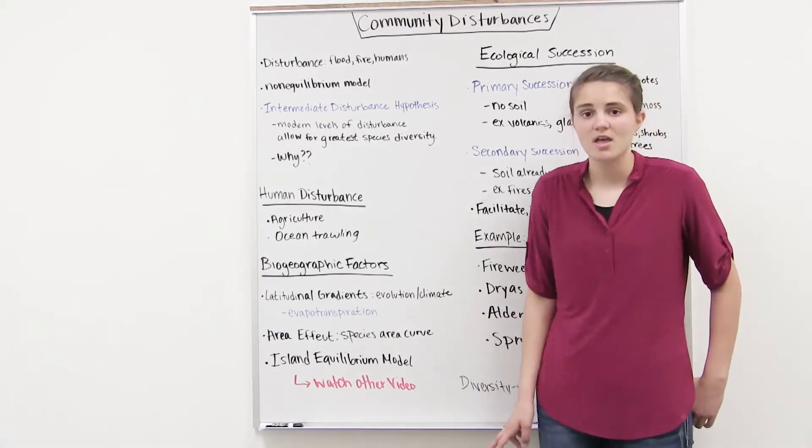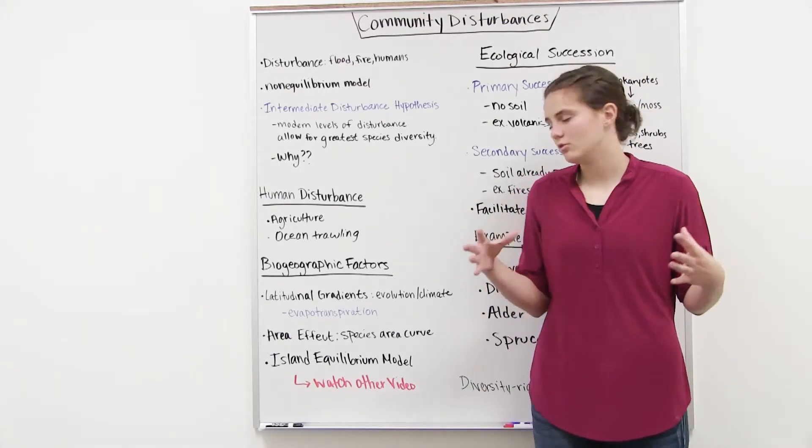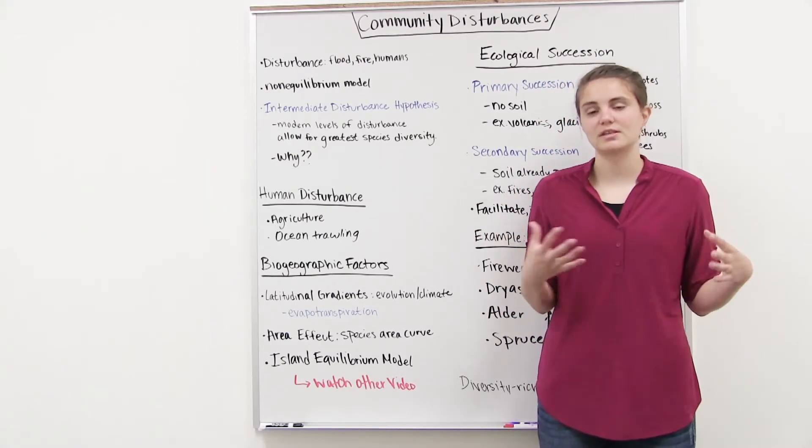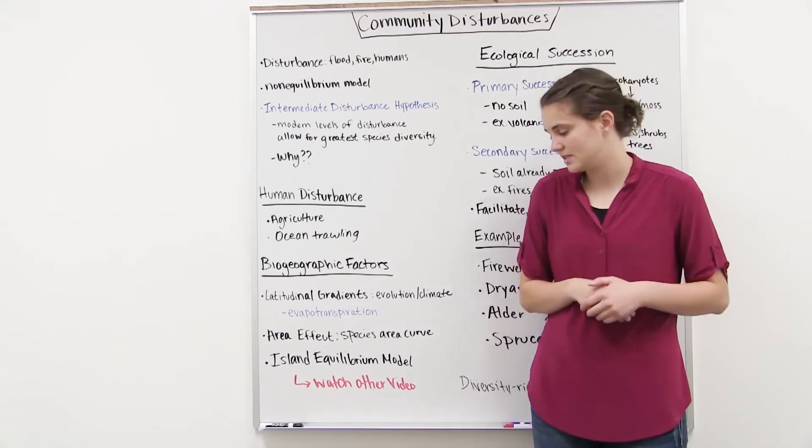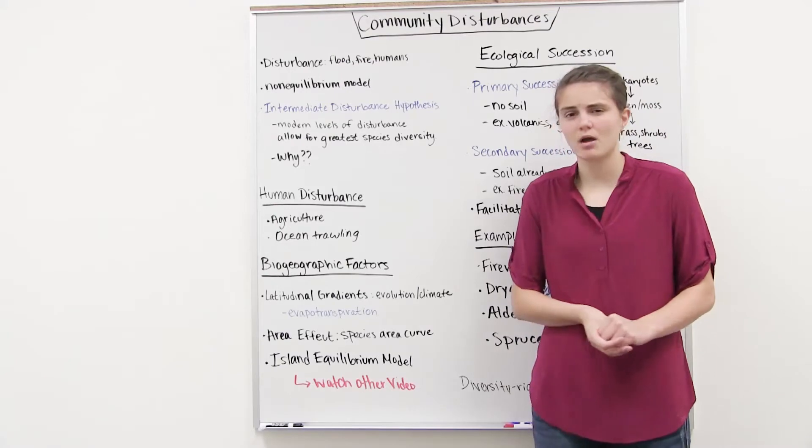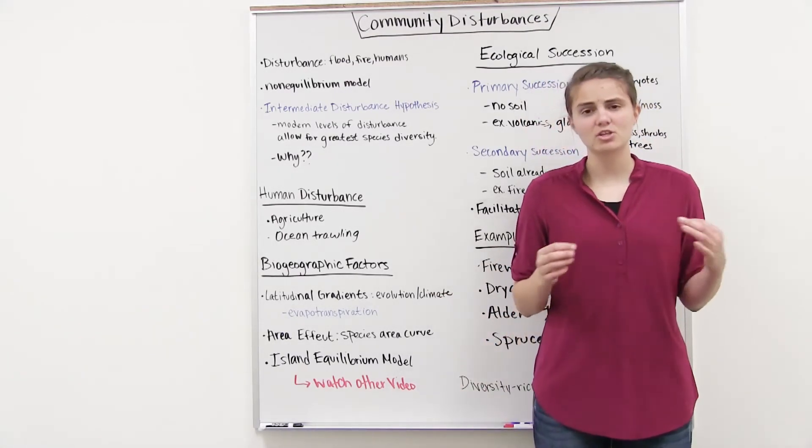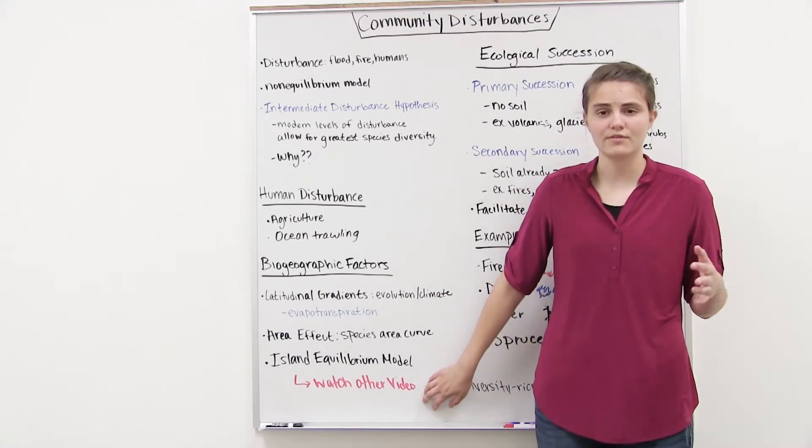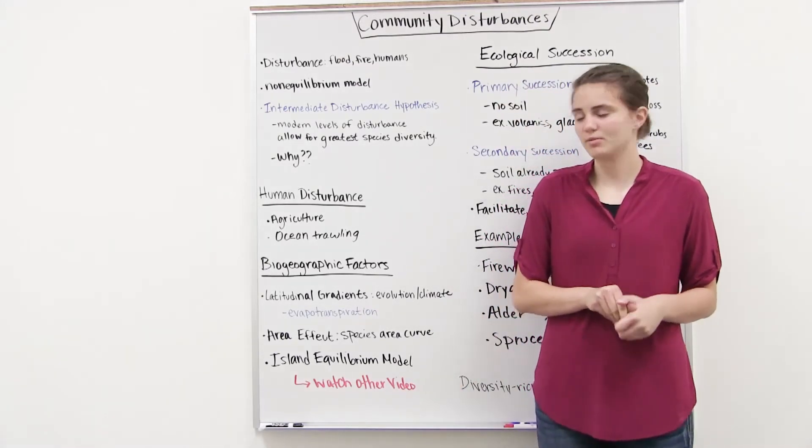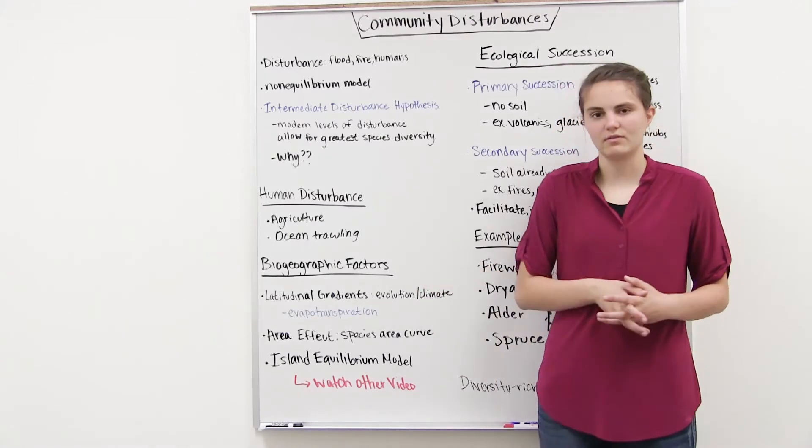And then the other thing that can affect species diversity that has to do with biogeographical factors is the area. So generally if all factors are the same, the larger the area where communities are residing, we tend to find more species. And that's just been proven with different experiments and things. And then finally, this kind of goes into the island equilibrium model and how that also can affect the species diversity. But I'm not going to talk about this video. There's another video that you can look for on the Tutoring Center website that will go into more detail about the specifics of the island equilibrium model. But just know that it's kind of under this species diversity with biogeographical factors.